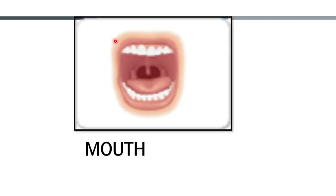This is the picture of our mouth. In the mouth, we have tongue, we have teeth, and we have saliva. With the help of the tongue, we taste the food — whether the food is sweet, bitter, or sour. With the help of teeth, we chew the food properly, and saliva makes our food soft, and soft food is easy to swallow.